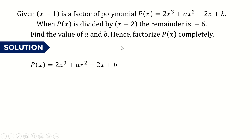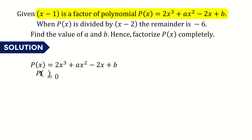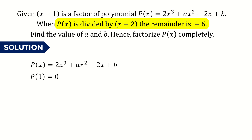The first piece of information is that x minus 1 is a factor of polynomial p. We can use the factor theorem: if x minus 1 is a factor, then p(1) equals 0. That's the factor theorem applied here.